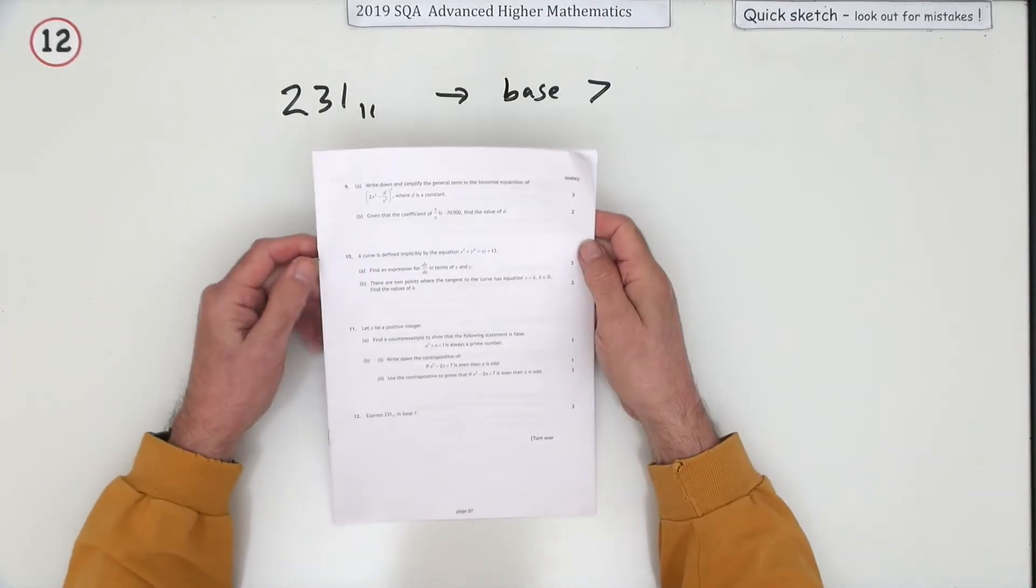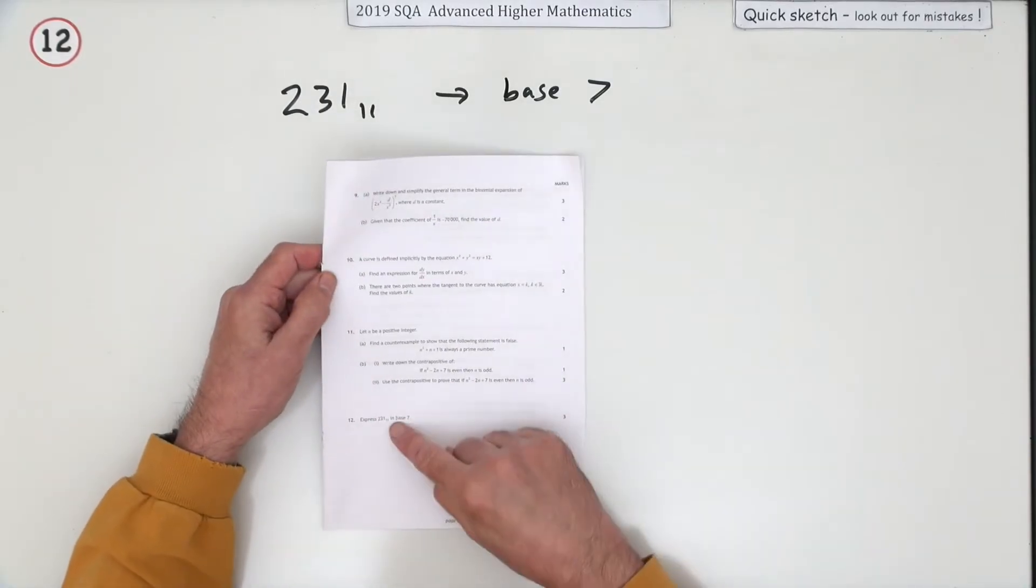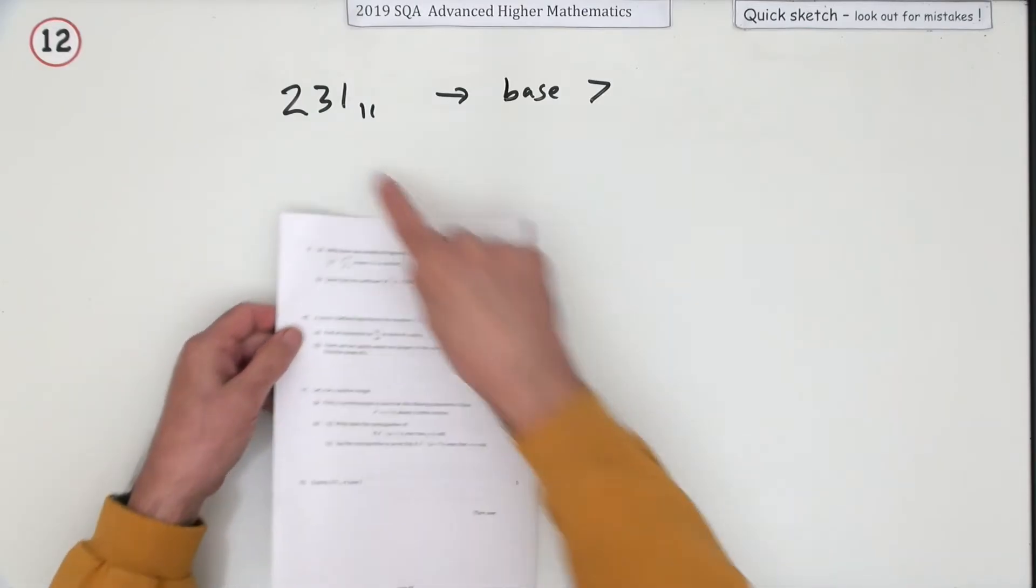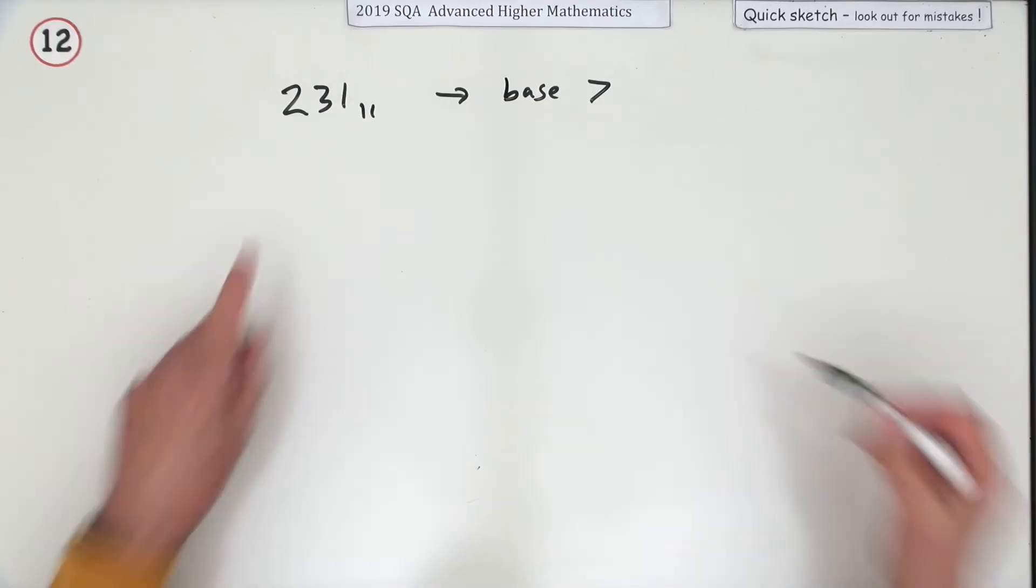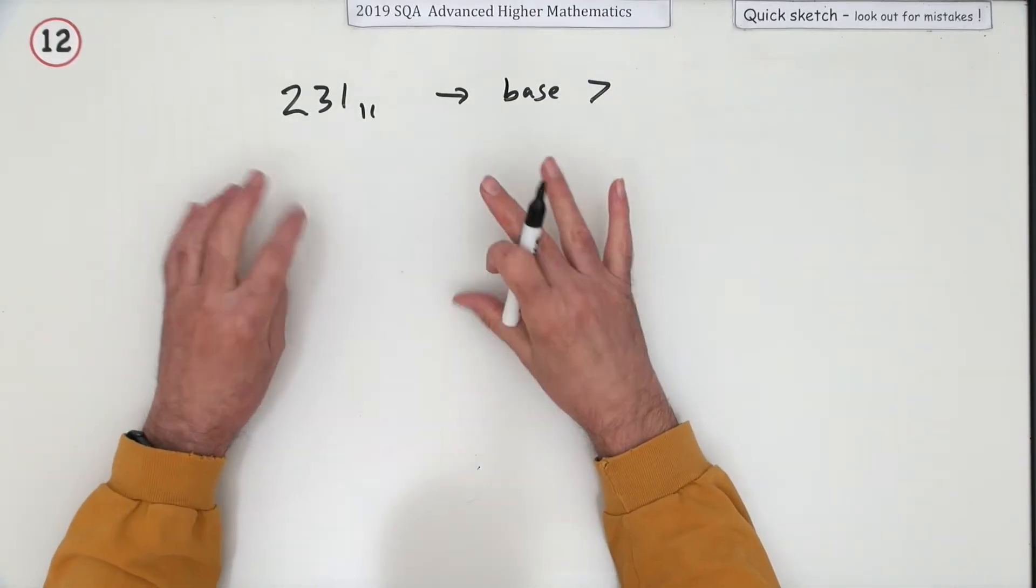Number 12 from the 2019 Advanced Higher Maths. Number bases: you're getting three marks for changing a number from one base to another. It's only the same time this has appeared, just to remember, in the Advanced Higher since it became the Advanced Higher back in 2000.